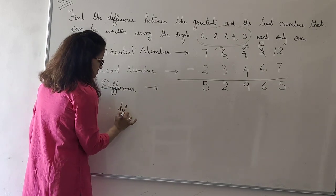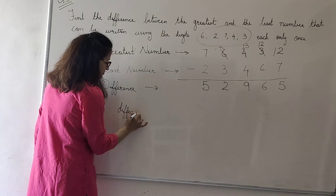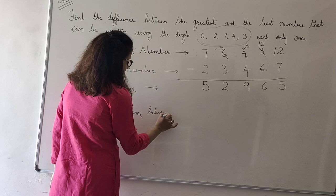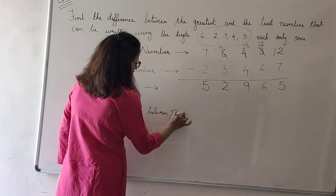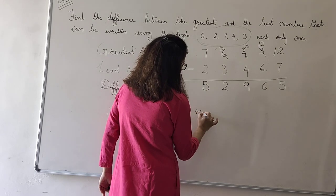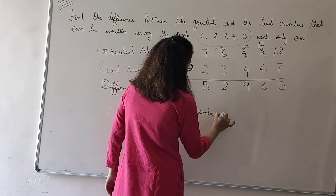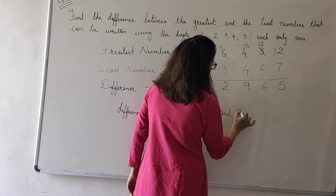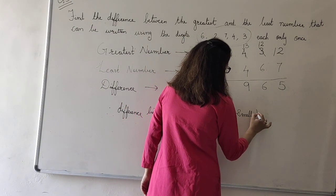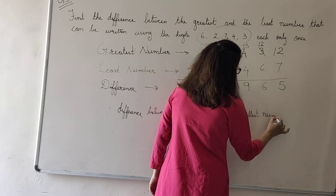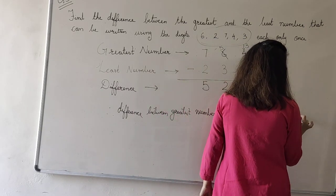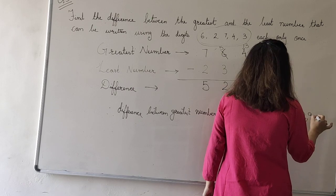Therefore, difference between greatest number and smallest number or the least number is 52,965.